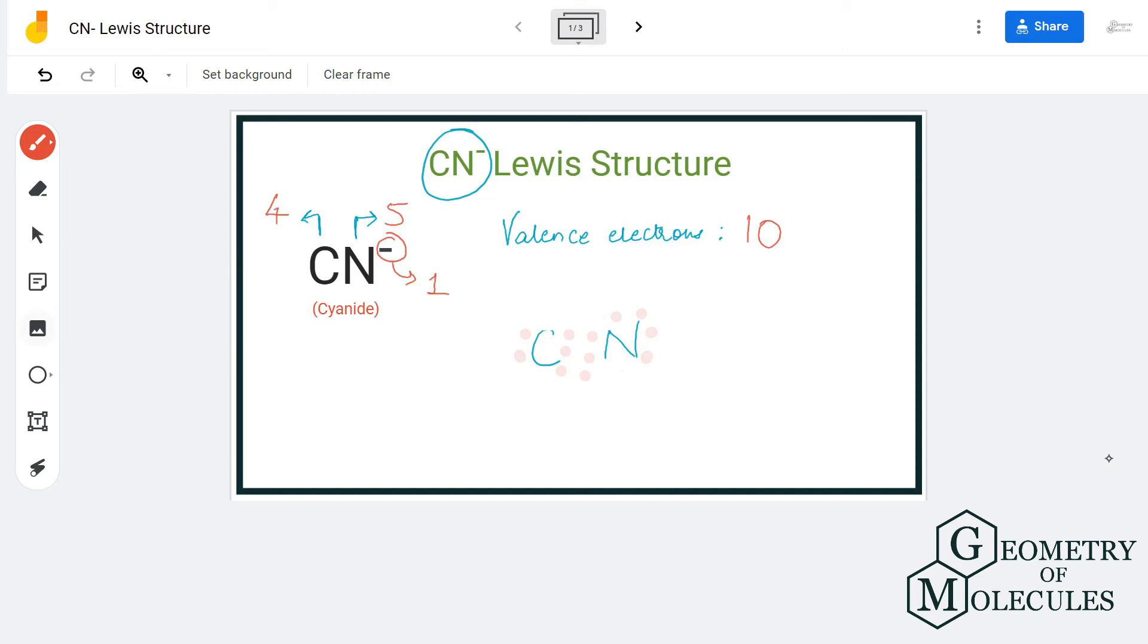In total there are six electrons being shared, and nitrogen here has a complete octet as you can see because it has eight valence electrons in its outer shell. When we come to carbon, three out of its four valence electrons are shared with nitrogen, and as it is accepting one more extra electron, it has a complete octet.